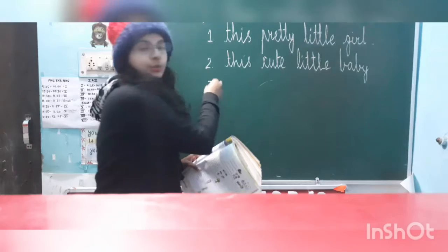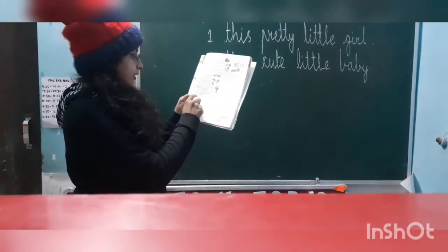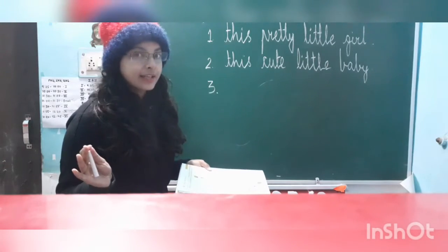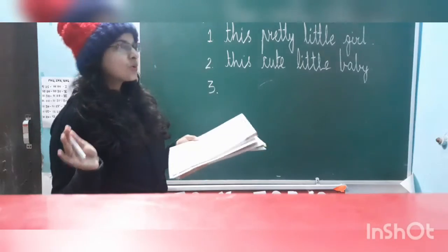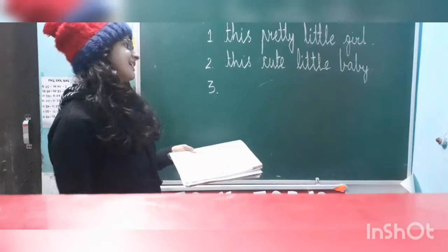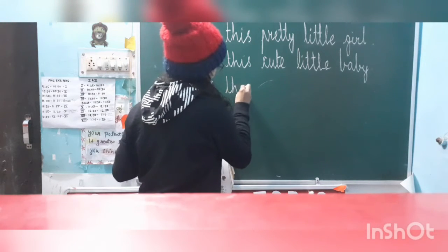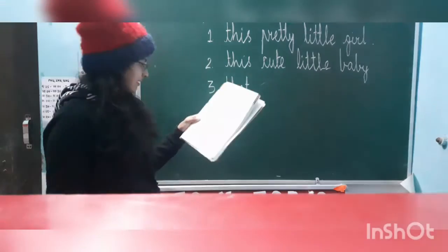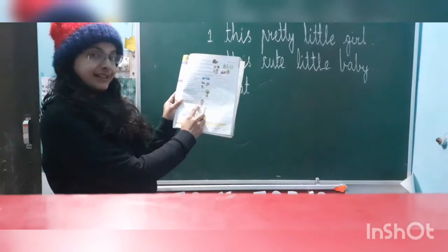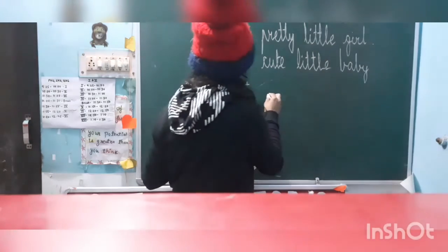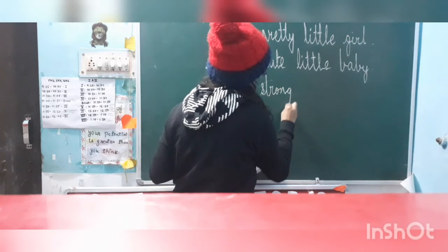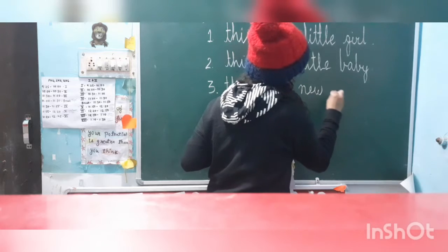Third one: 'Those strong new bats.' Now 'those' is there — remember, the singular form of 'those' is 'that.' So instead of 'those' we will write 'that.' Strong and new will remain, and we will change 'bats' into 'bat.' Answer: That strong new bat.